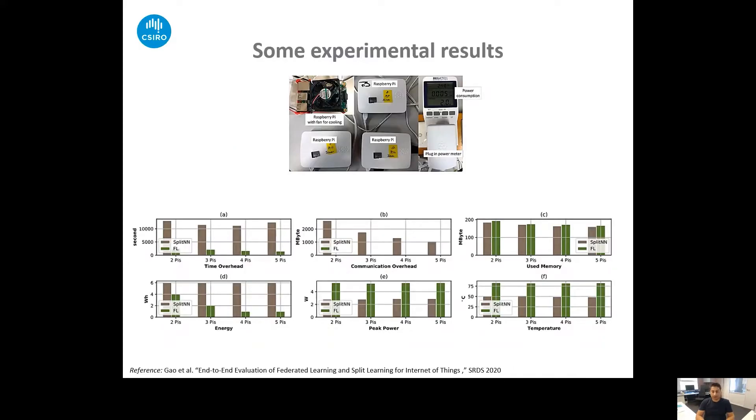In this slide, we are talking about our separate work where we implemented split learning and federated learning on Raspberry Pi kits to see their performance. So our performance metrics are training time, memory usage, power consumption, temperature, and communication overhead. So in our experiments, we found that bigger models and datasets are challenging in terms of computation and time for IoT. So we limit our detailed observations and choose the 1D-CNN model with the first two layers running on Raspberry Pis and HCG dataset.